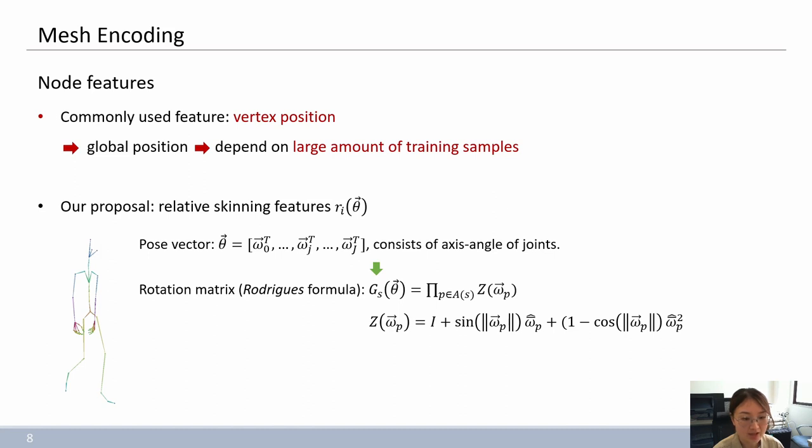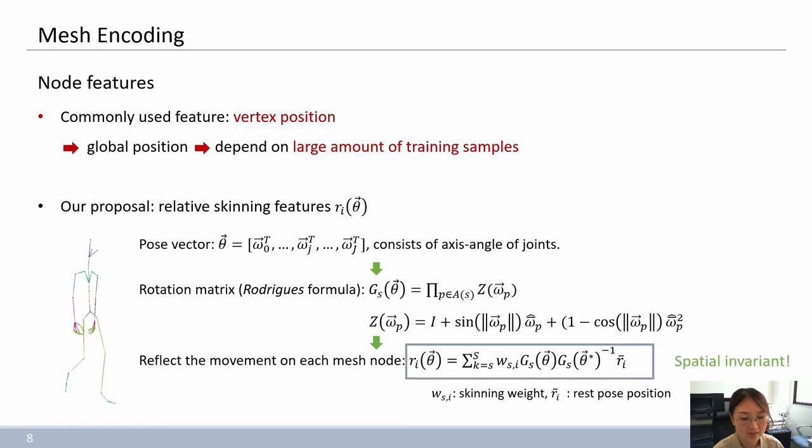And then we can get G_s(theta) as the corresponding rotation matrix. Finally, to reflect the influence of bone movement on each mesh node, we combine the rotation matrix, linear skinning weight, and the rest pose position to form the final relative skinning feature descriptor r_i(theta). And this r_i(theta) is spatial invariant.